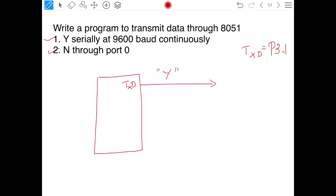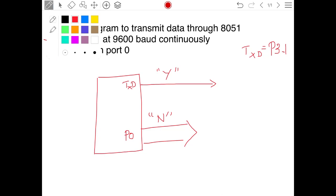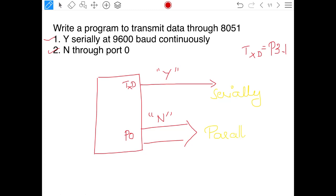Second bit is asking you to send N through port 0. We know port 0 is parallel communication port. So, I will be sending this data parallelly. What is the data? The data is N through a port. Here we can differentiate clearly that Y is sent serially and N is sent parallelly.